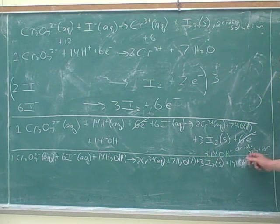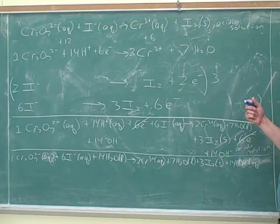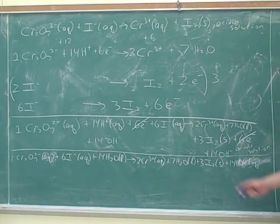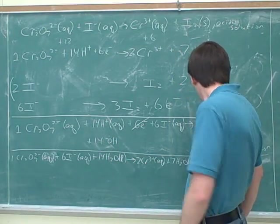This actually is a good trick. I haven't seen this before, but this is a good way. Now we don't really have to learn a whole new way to do basic solutions. You can just treat it at first as if it was acidic. And then get rid of the H pluses by adding hydroxides. So that's good.